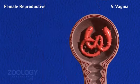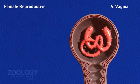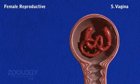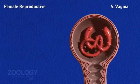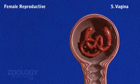Ova are budded off from the ovaries. From here, they pass down the oviduct to the common oviduct, where each is coated with albumin secreted by the albumin glands. Ova are then passed into the vagina, where they are stored till fertilization takes place during copulation.